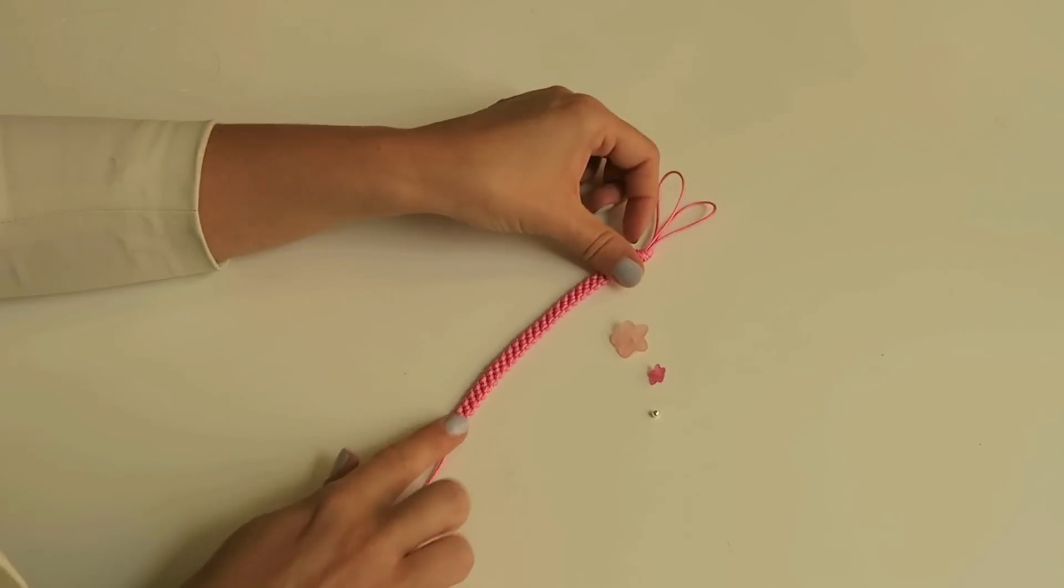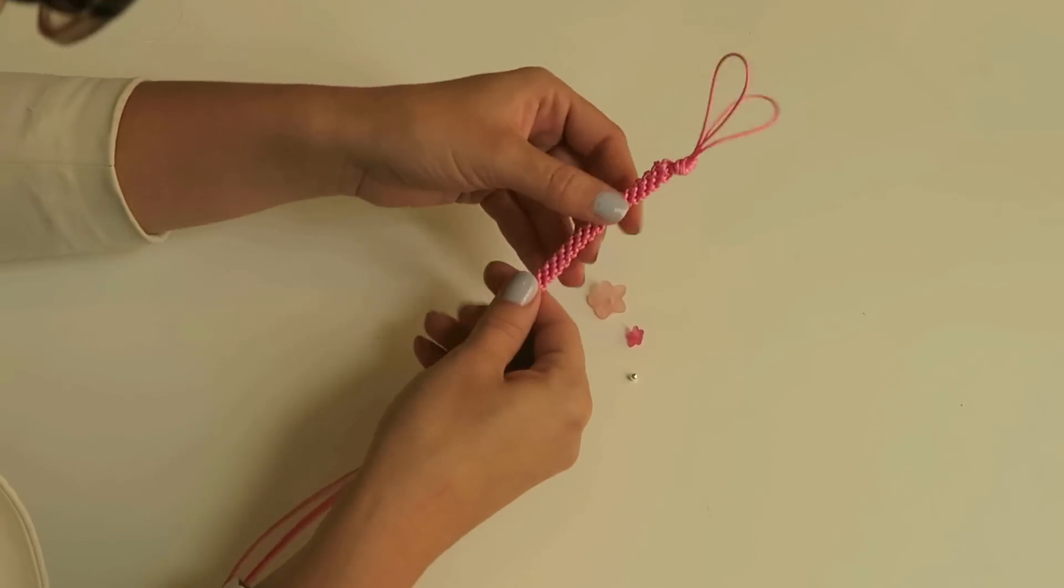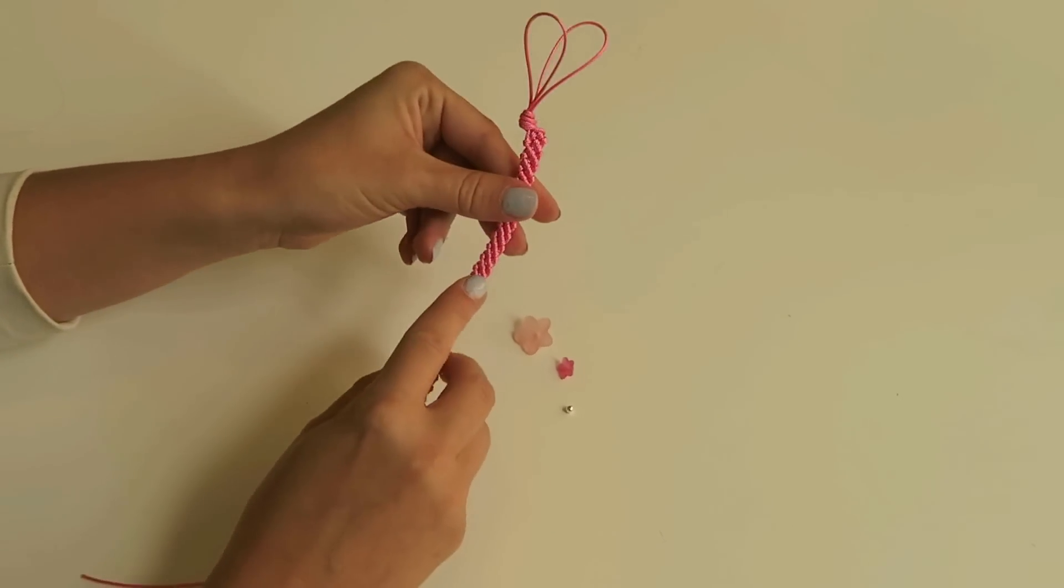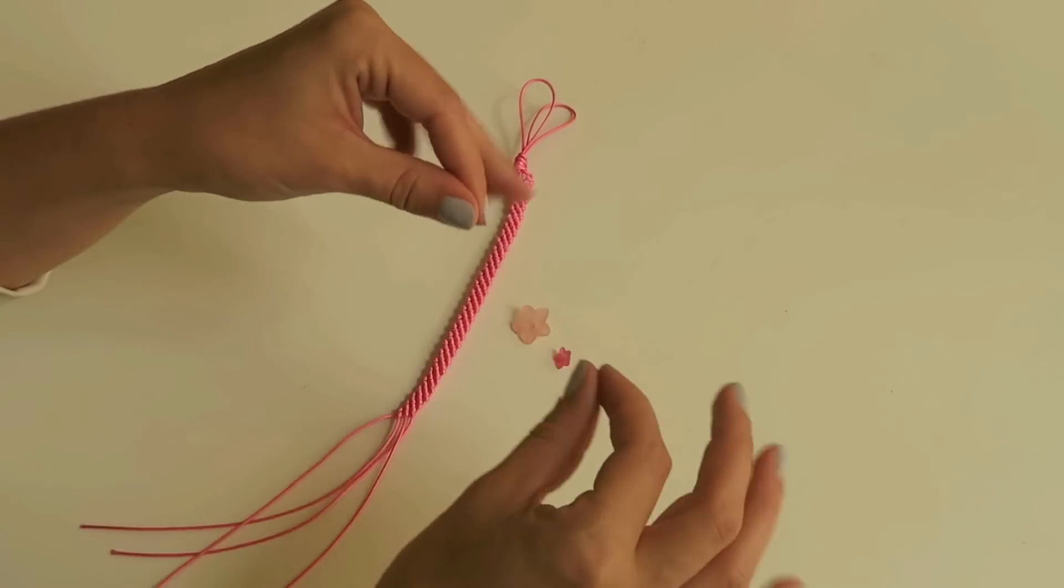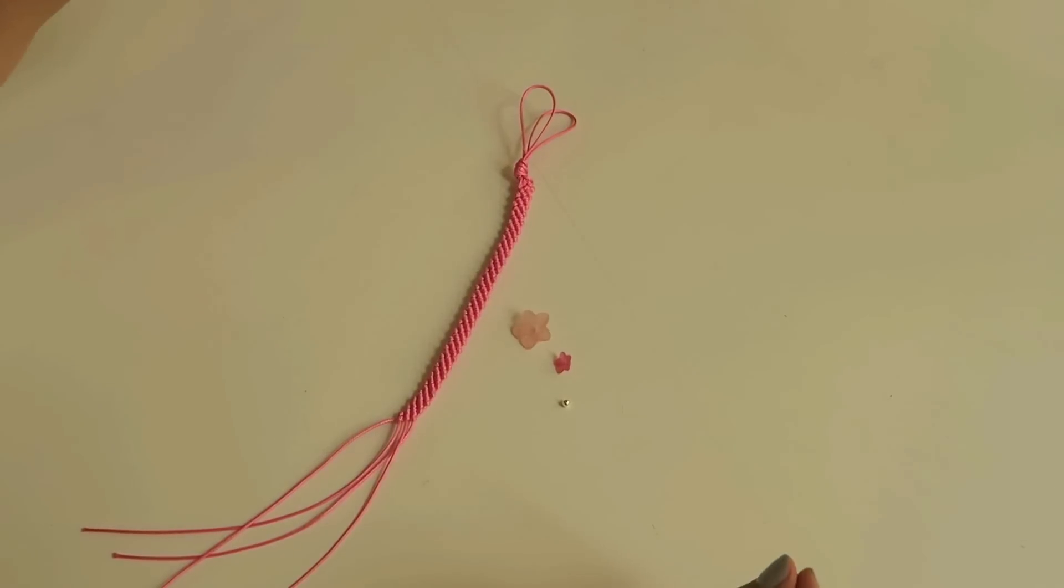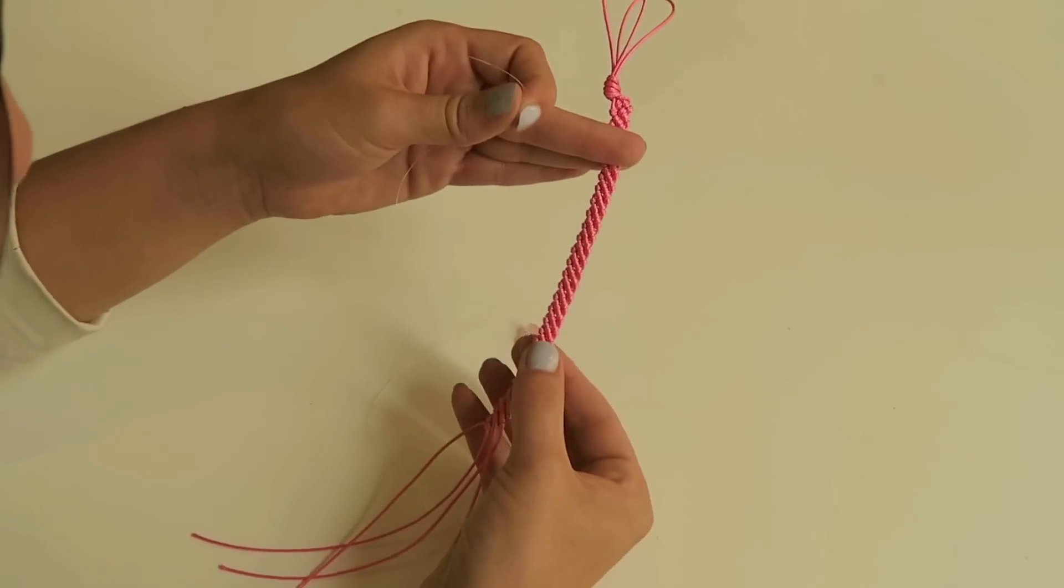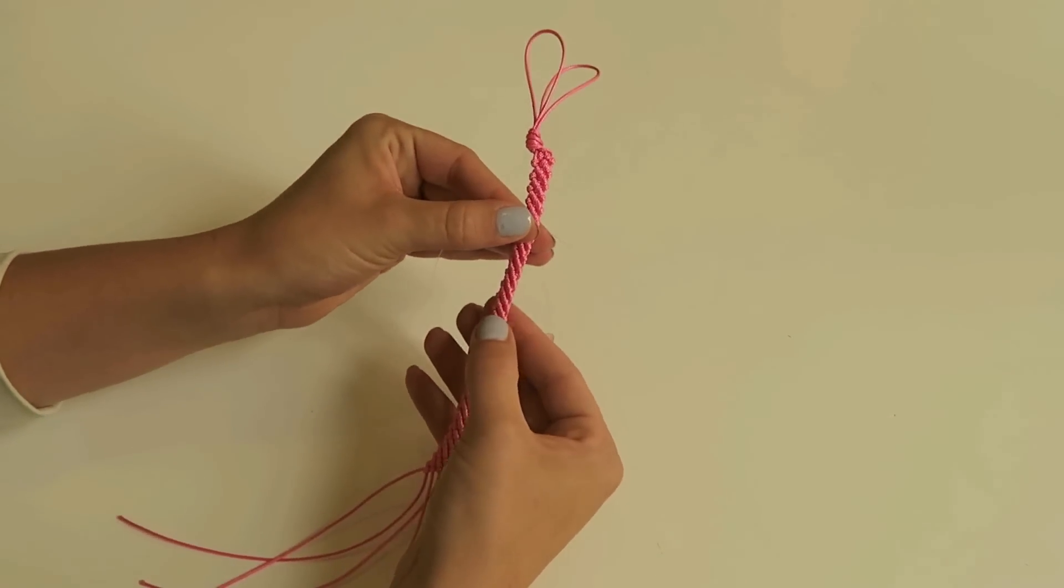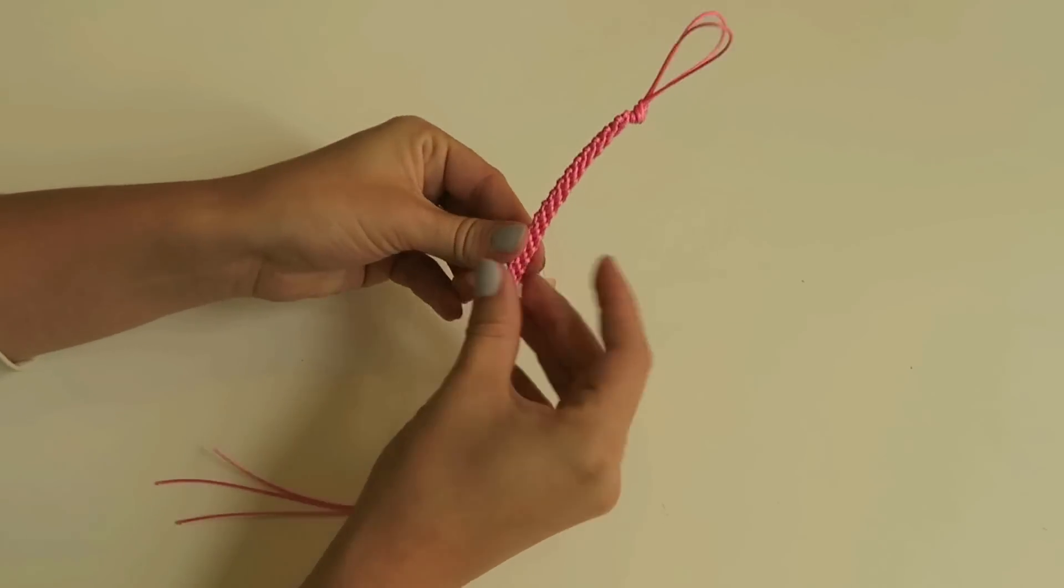Okay, so the bracelet is now long enough. So we're gonna fix the flower beads on it. Just pull it a little bit so there's some room between the knots. And then you're gonna take a piece of nylon thread, about 20-25 centimeters. And on the back of the bracelet, you're gonna stick it halfway through one of the knots.